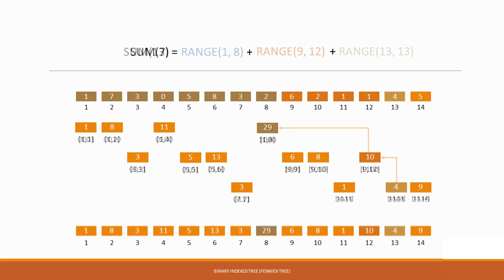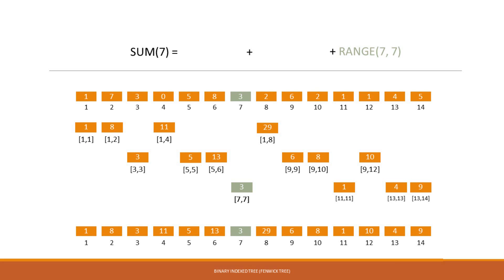Another example: we want to compute the sum of the first 7 numbers. So we start at position 7, which is the range 7 to 7. We want to get the previous range, so we go up and left to the range 5 to 6. And then up and left again to the range 1 to 4. In binary: we start at 7, which is 0111. We flip the last set bit to get 0110, which is 6. And we flip the last set bit again to end up with 0100, which is element 4.